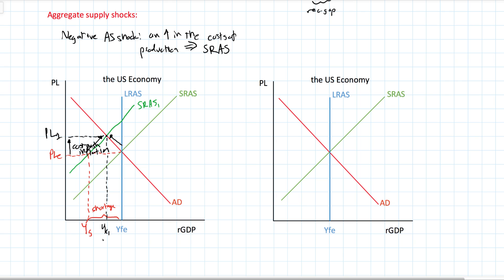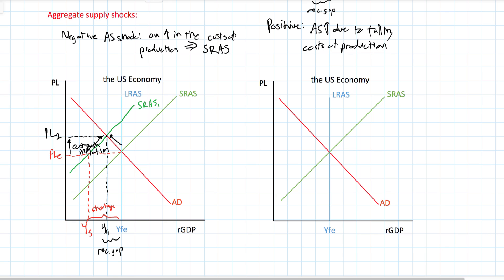We do have a recessionary gap here as well, but this recessionary gap is not caused by decreasing demand for goods and services — rather, decreasing supply. There can also be positive supply shocks. A positive supply shock occurs when aggregate supply increases due to falling costs of production. For example, if the government enacts a massive policy of deregulation, firms can produce more cheaply, and at every price level firms wish to produce a greater quantity of output, so we see an increase in short-run aggregate supply to SRAS1.